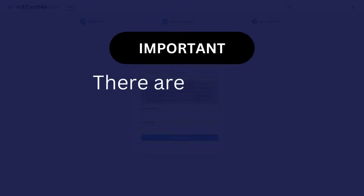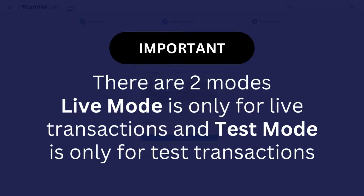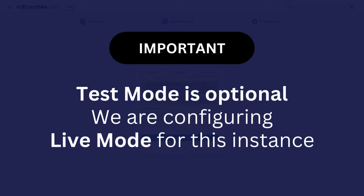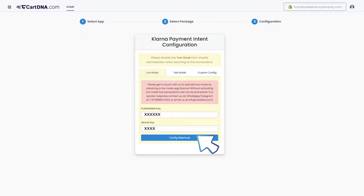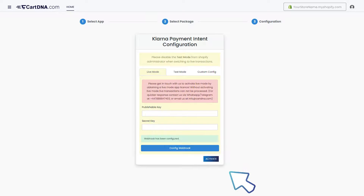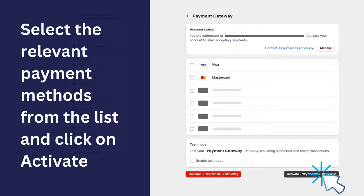Important: there are two modes. Live mode is only for live transactions and test mode is only for test transactions. Test mode is optional. We are configuring live mode for this instance. Enter the credentials that you extracted from your Klarna payment account and click on config webhook, then click on activate. Select the relevant payment methods from the list and click on activate.